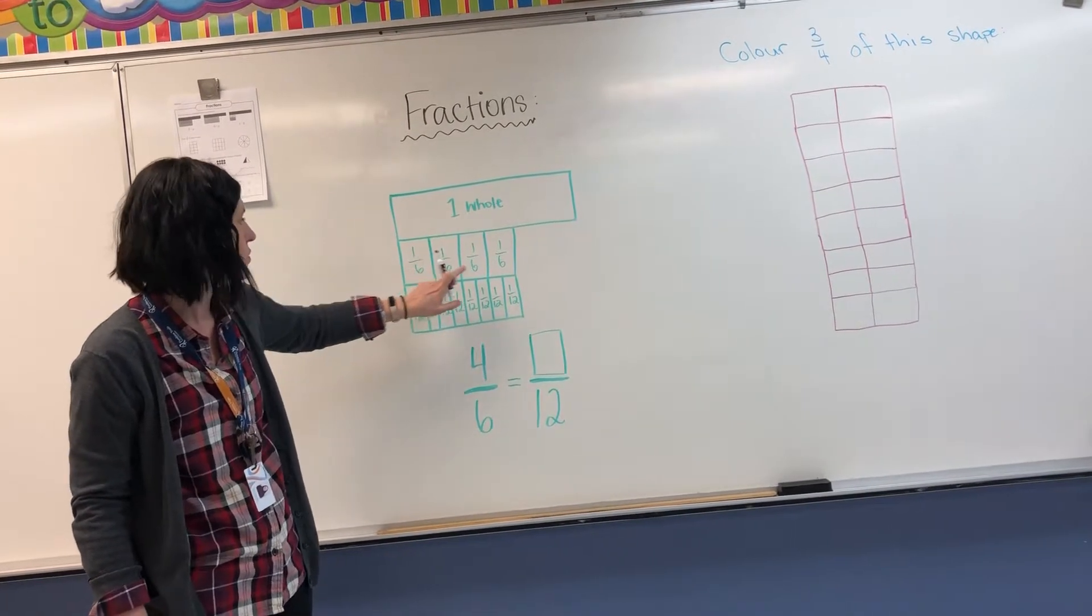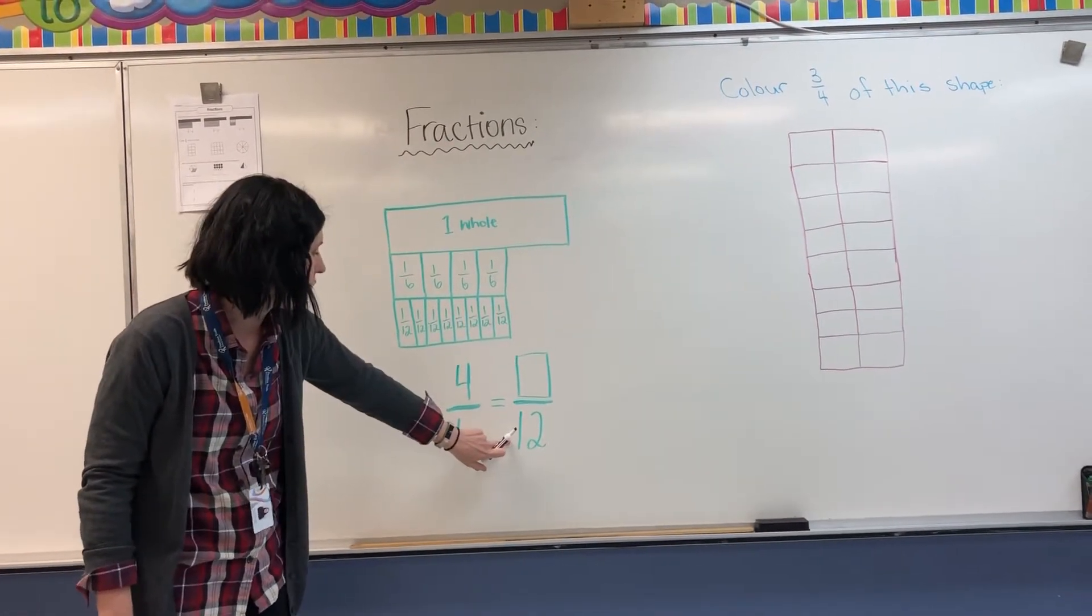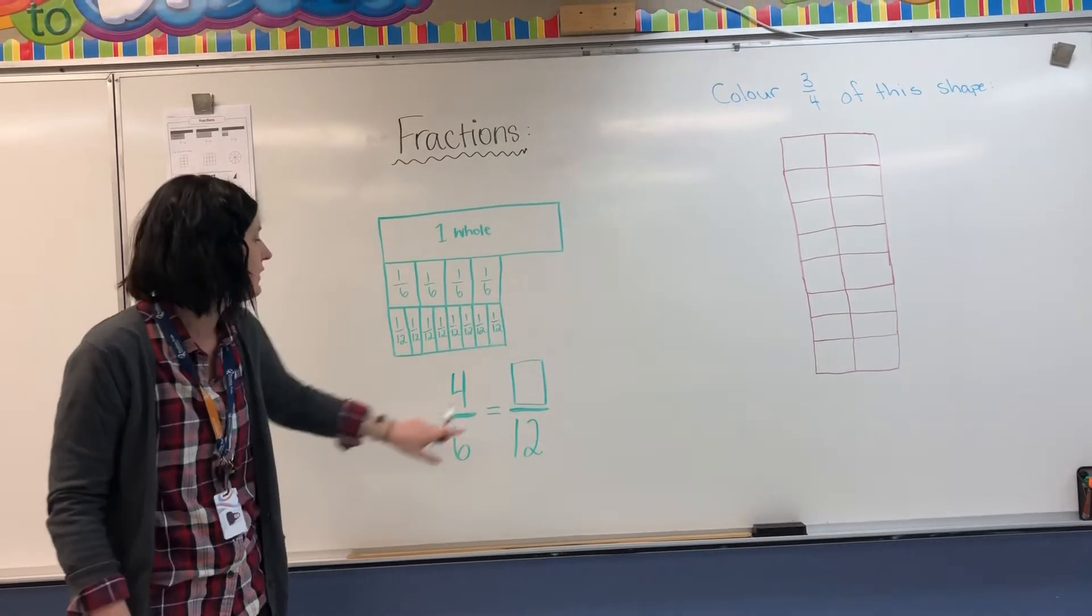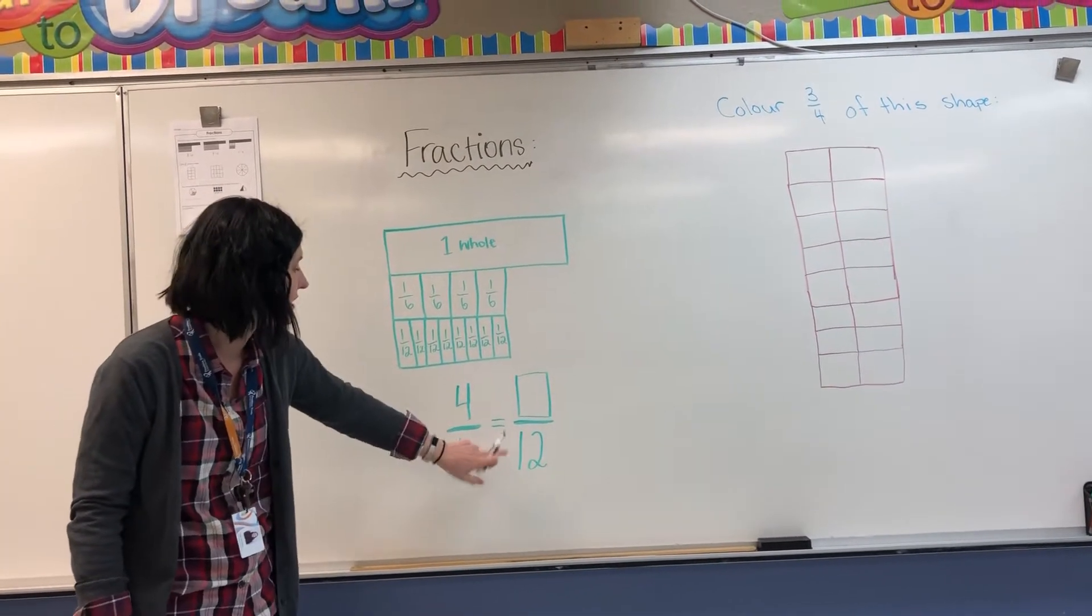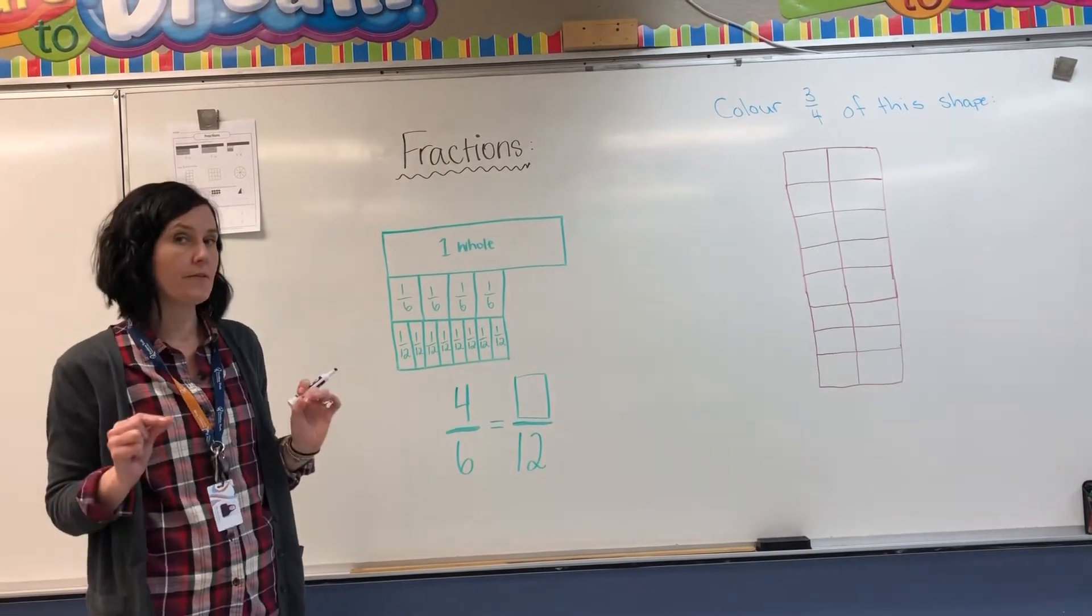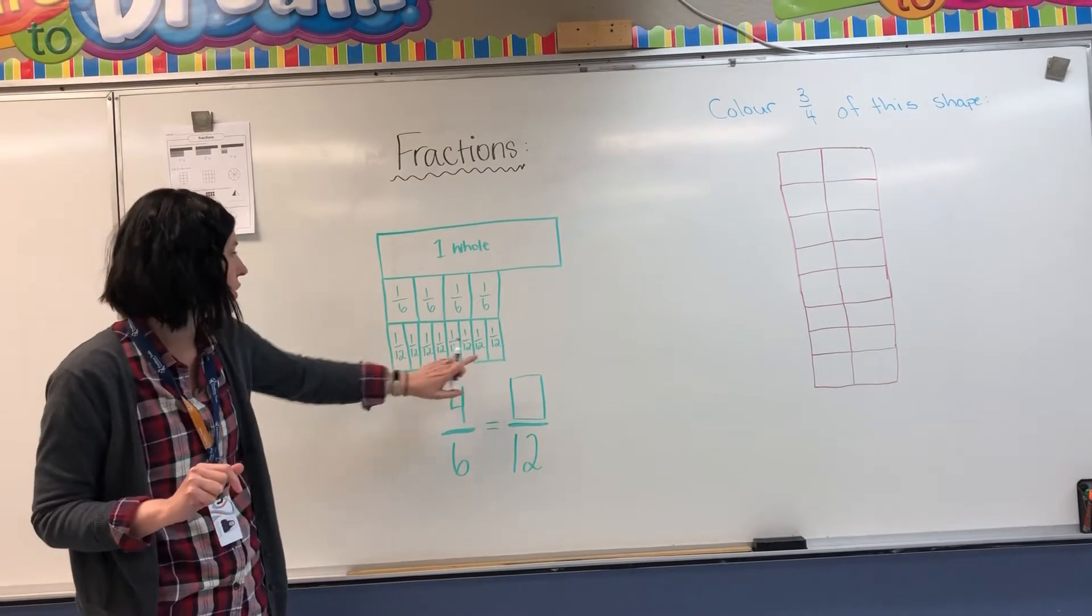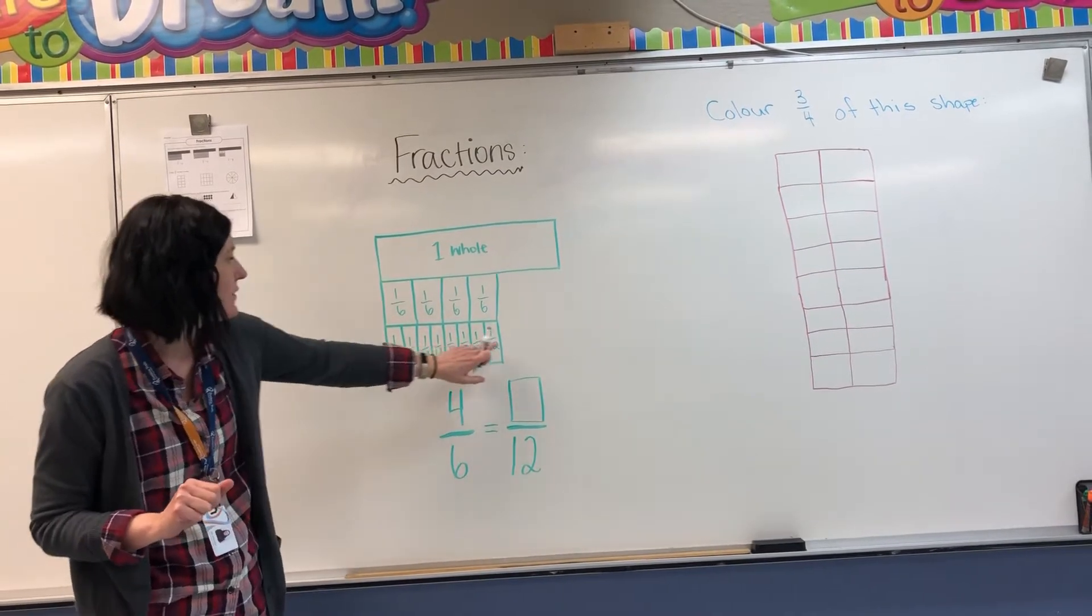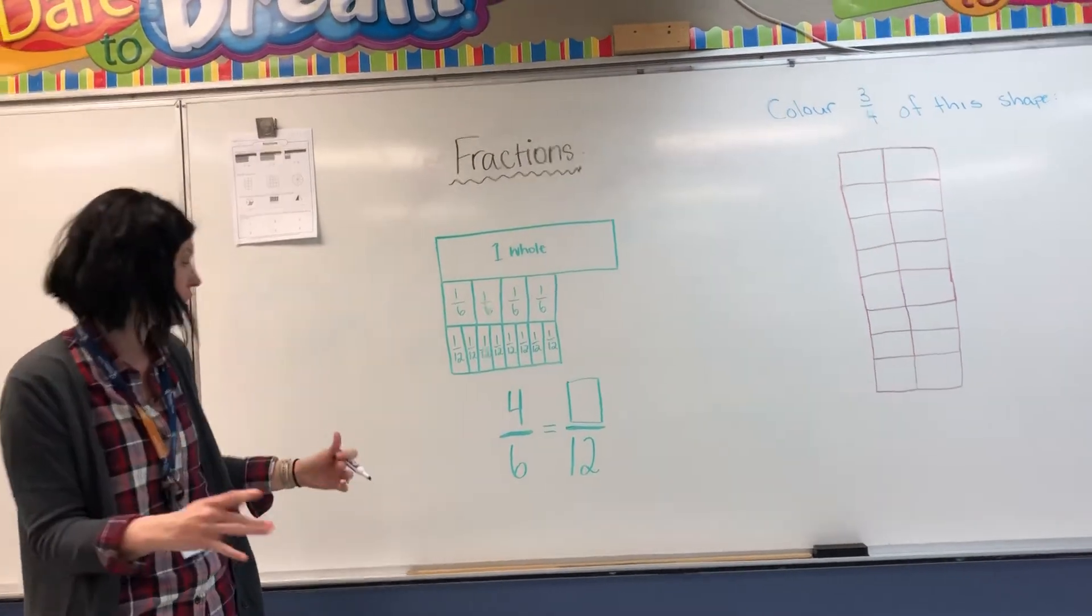So one, two, three, four. Four of them are here. We need to figure out what the equivalent fraction is here. So four sixths is equivalent to how many twelfths. You can count these here because we've divided this into twelfths as well, or you can use math to figure it out like we did in the last worksheet.